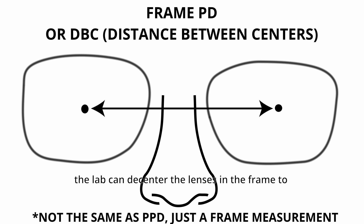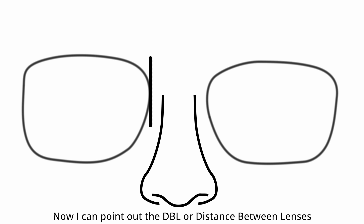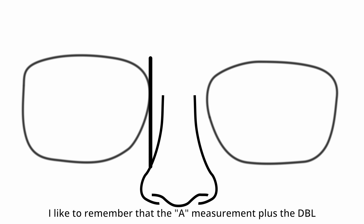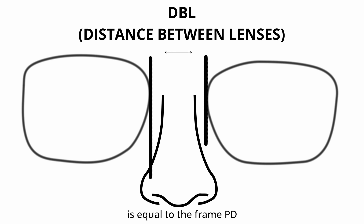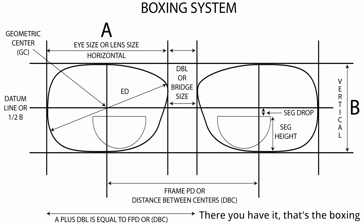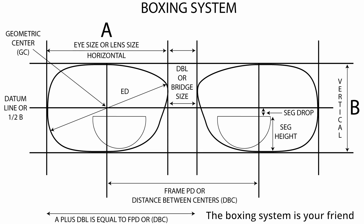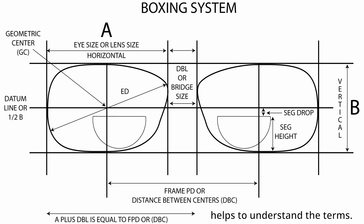The lab can decenter the lenses in a frame to put them right in front of the patient's pupils. Now I can point out the DBL, or distance between lenses. I like to remember that the A measurement plus the DBL is equal to the frame PD. That's the boxing system in a nutshell. The boxing system is your friend, and thinking about this diagram helps to understand the terms.